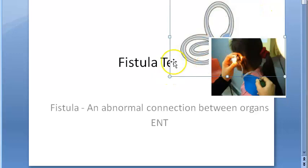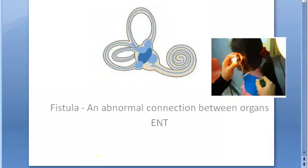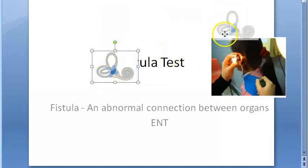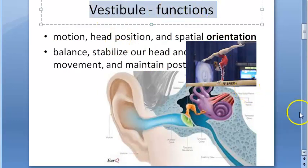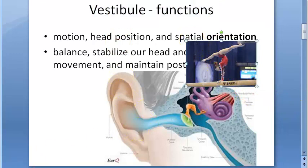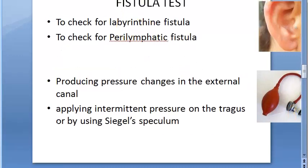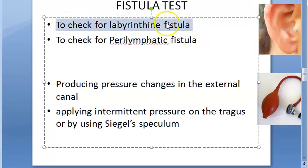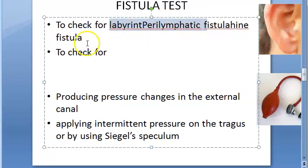The part of the ear we are testing is the labyrinth, which contains the vestibule. In the fistula test, we are assessing the functions of the vestibule. Specifically, we check for labyrinthine fistula and perilymphatic fistula.